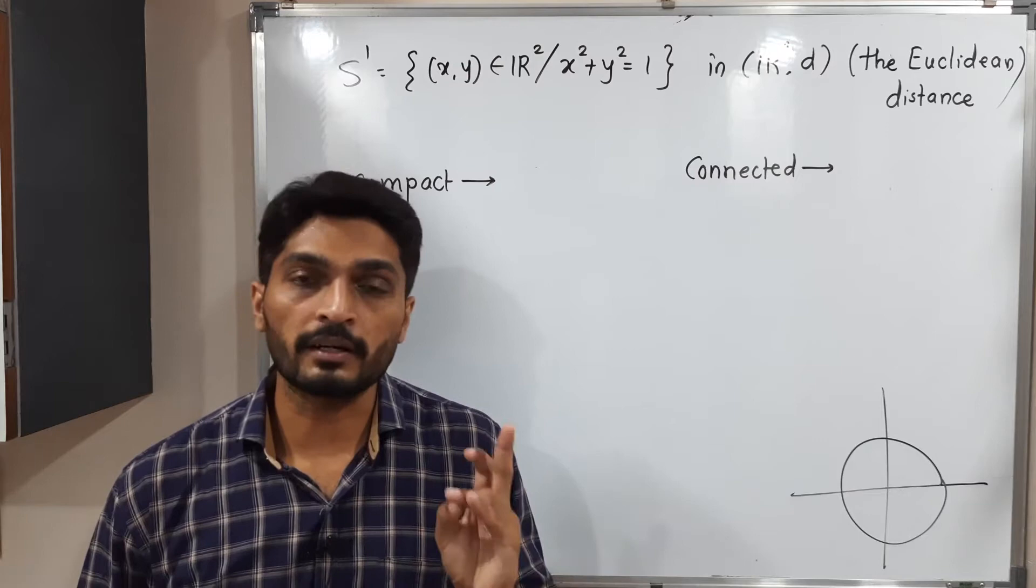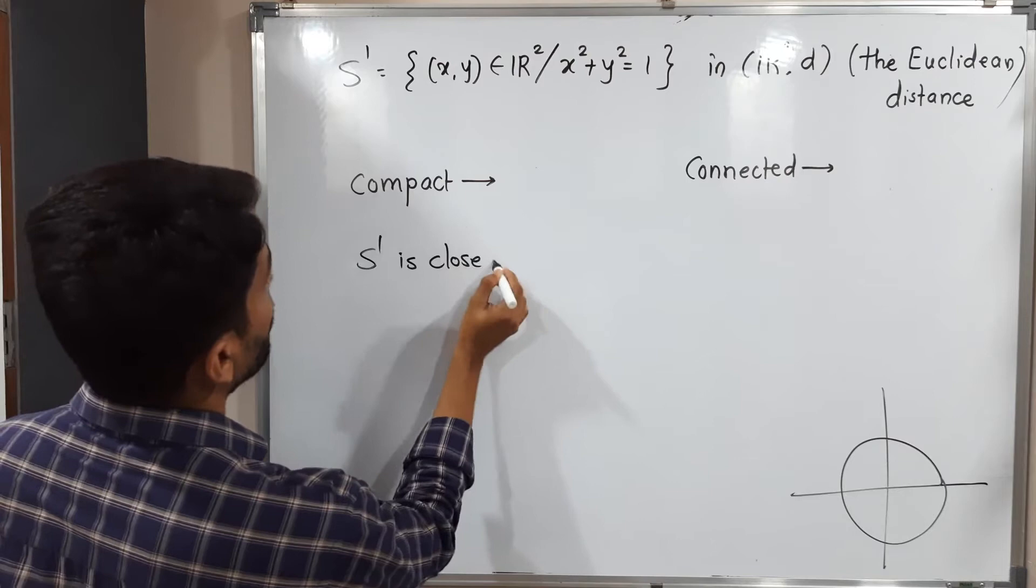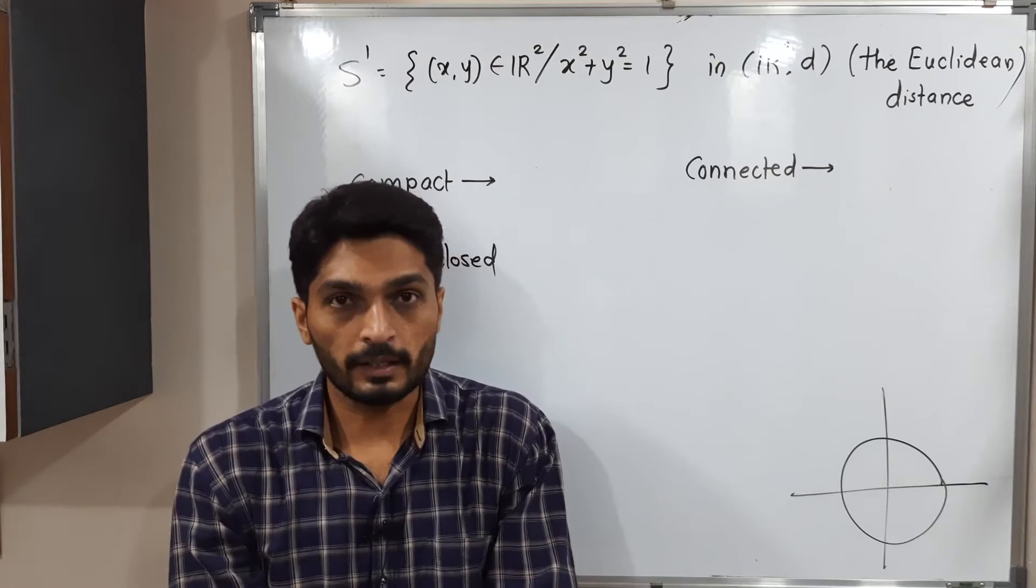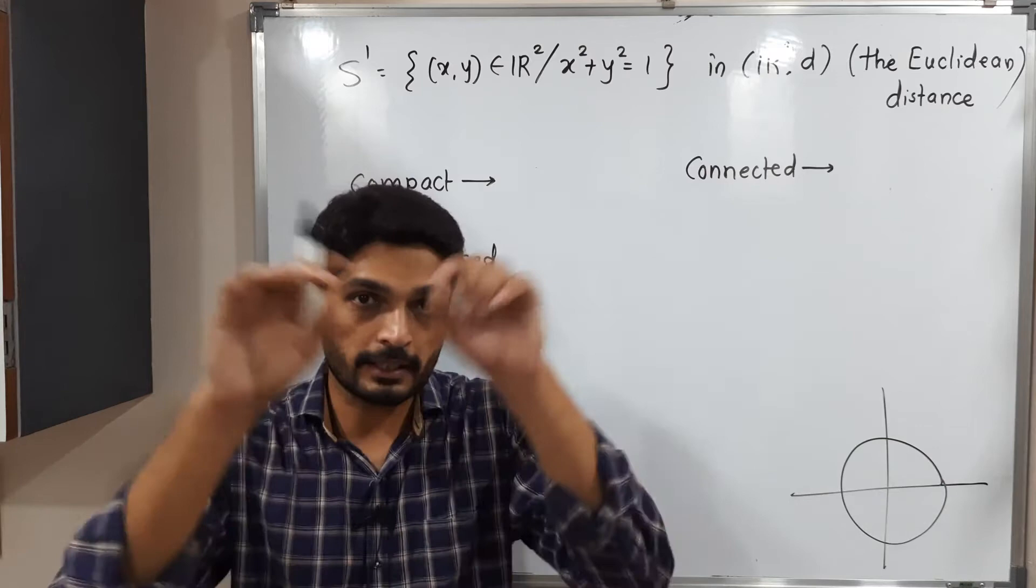Let us check this set is closed and bounded or not. See, S1 is closed. It is closed I will say since it contains the points which lie on a circle. How to prove the set is closed? If its complement is open we say the set is closed. Its complement will be interior part of a circle and exterior part of a circle since it contains only boundary points.